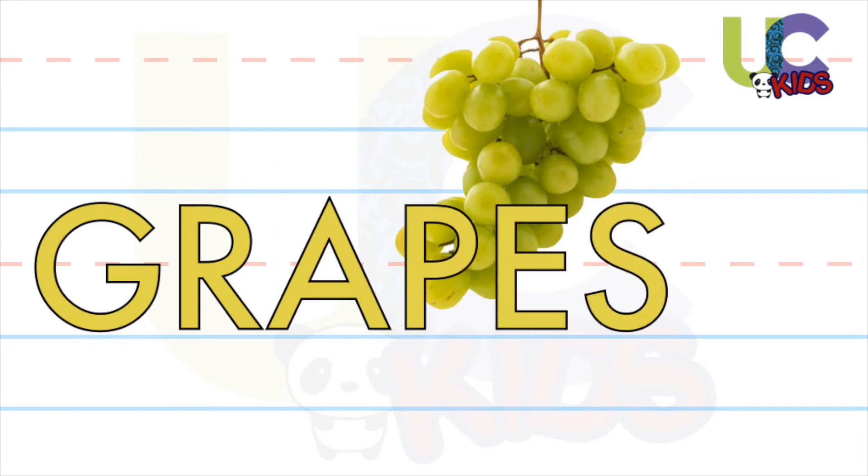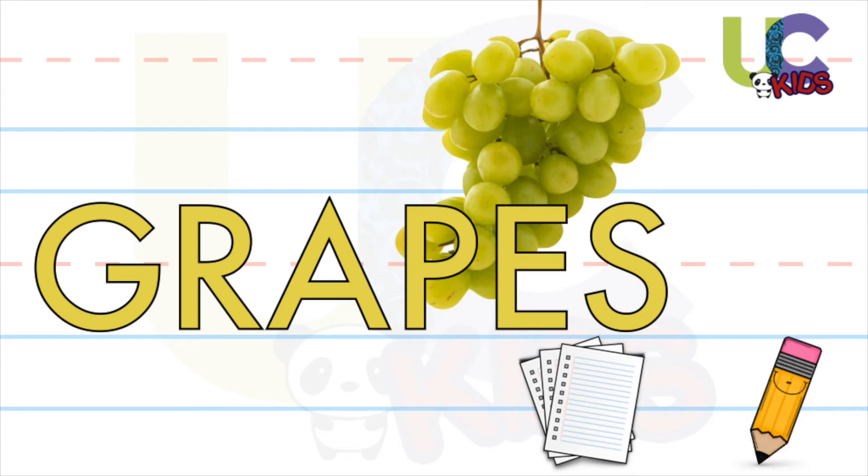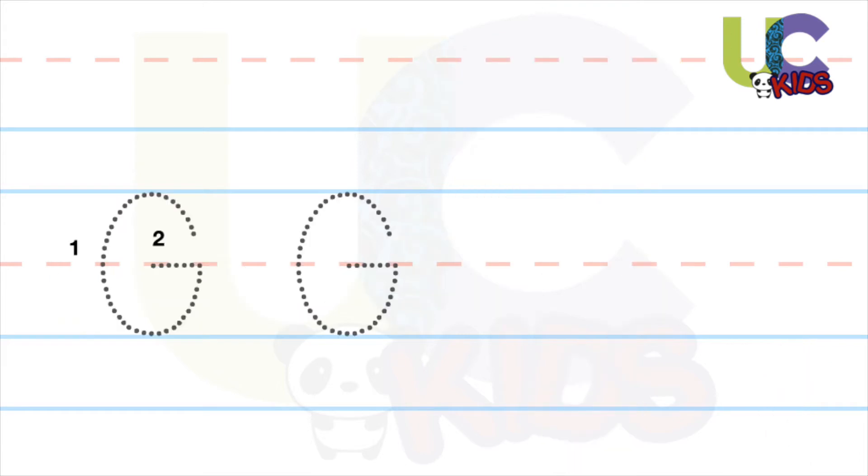For this, you'll need a practice sheet and a pencil. To draw a capital G, we'll start at the top and draw a curved line all the way round to the middle. And at the end, draw a sleeping line to connect.